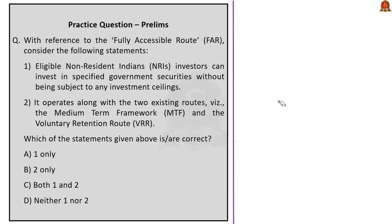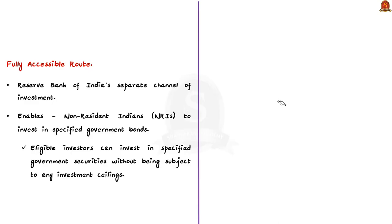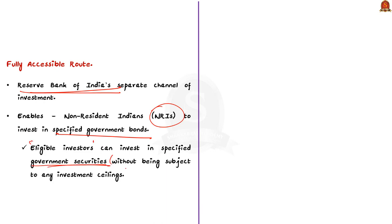Let us look at this quiz question. This quiz question is talking about the fully accessible route mechanism for investment. Before answering, let us see in brief about the fully accessible route to get concepts clear. Reserve Bank of India RBI has introduced a separate channel of investment called Fully Accessible Route in 2020. It enables non-resident Indians to invest in specified government bonds. An important point to be noted is that the eligible investors can invest in specified government securities without being subjected to any kind of investment ceilings.